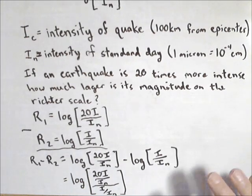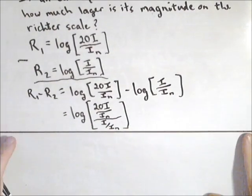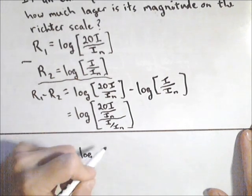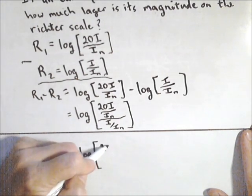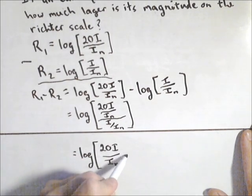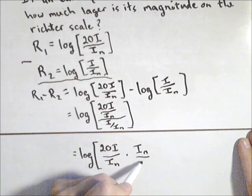Now what we're going to do inside here is flip and multiply, because we have division by a fraction. This equals log of (20I/I_n) times (I_n/I). This is where all the magic happens.